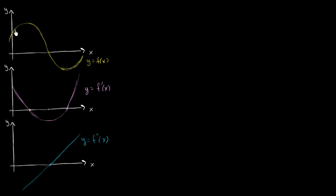What I have here in yellow is the graph of y equals f of x. Here in mauve, I've graphed y equal to the derivative of f, which is f prime of x. And here in blue, I've graphed y equal to the second derivative of our function — the derivative of the first derivative.